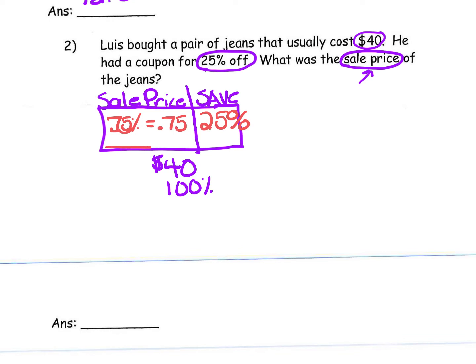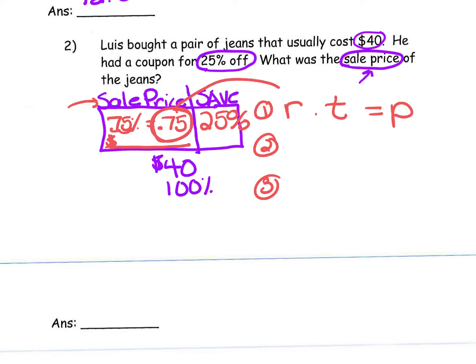Now it's time to calculate the sale price, because that is what we're looking for. Use your formula R times T equals P. Use the rate associated with sale price and use the total for the bar. Show your work and use your calculator to find the sale price. When you're done, write it on the line. When you're ready, move on to problem number three.